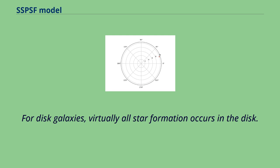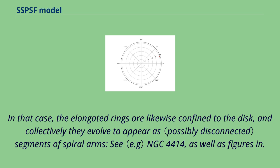For disk galaxies, virtually all star formation occurs in the disk. In that case, the elongated rings are likewise confined to the disk, and collectively they evolve to appear as segments of spiral arms, as seen in NGC 4414, as well as figures in.